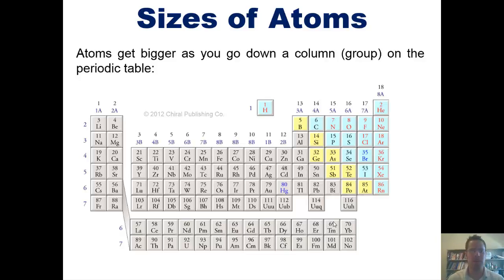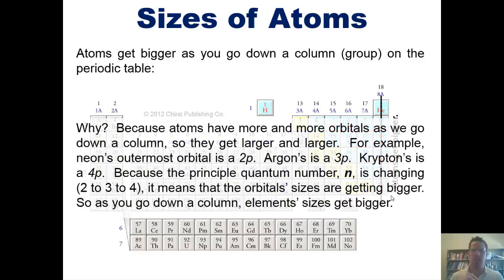As it turns out, atoms get bigger as you go down a column or a group on the periodic table. Why? Well, because atoms, as you go down a column on the periodic table, have more and more orbitals and more and more electrons. Hence, they get larger and larger.